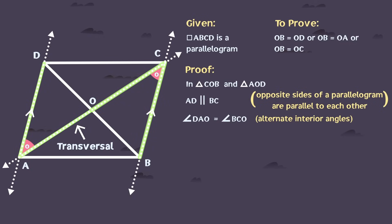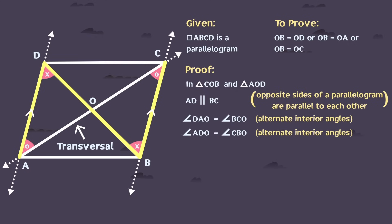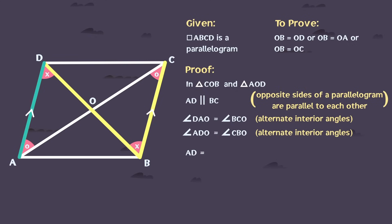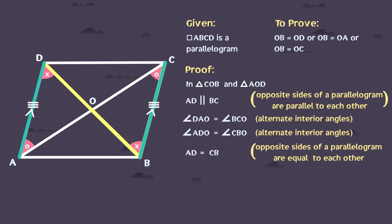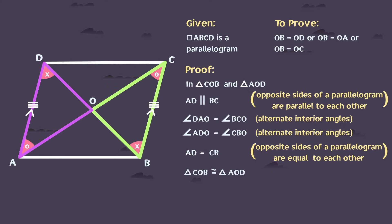Similarly, line segment BD also acts as a transversal between parallel lines AD and BC. Therefore, angle ADO and angle CBO also form a pair of alternate interior angles. We can say that side AD is equal to CB, because each pair of opposite sides of a parallelogram is congruent. Based on this, we can claim triangle COB congruent to triangle AOD. This is because whenever any two angles and the side included between the angles of one triangle are equal to the corresponding two angles and the side between the angles of the second triangle, the two triangles are said to be congruent by angle-side-angle criteria.